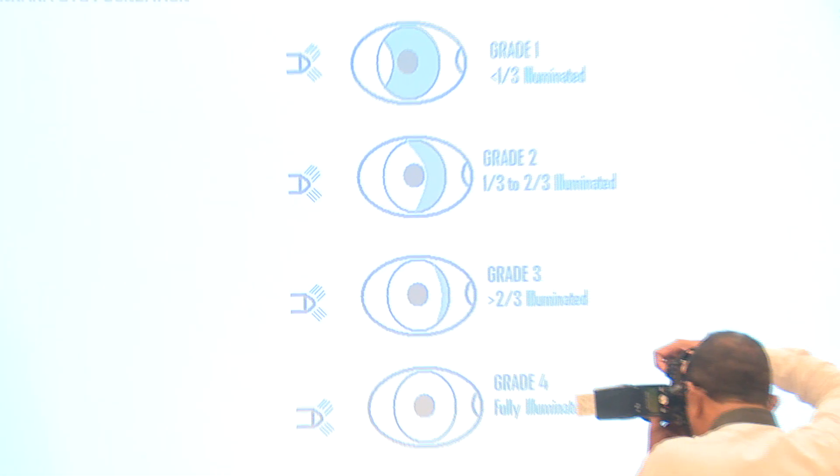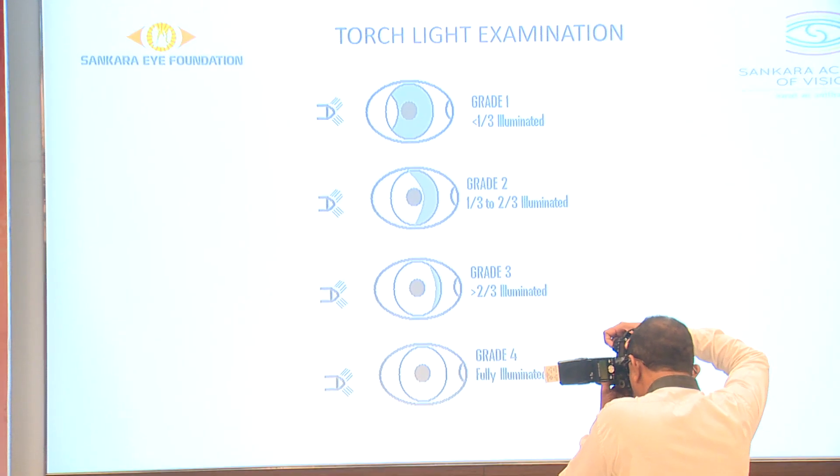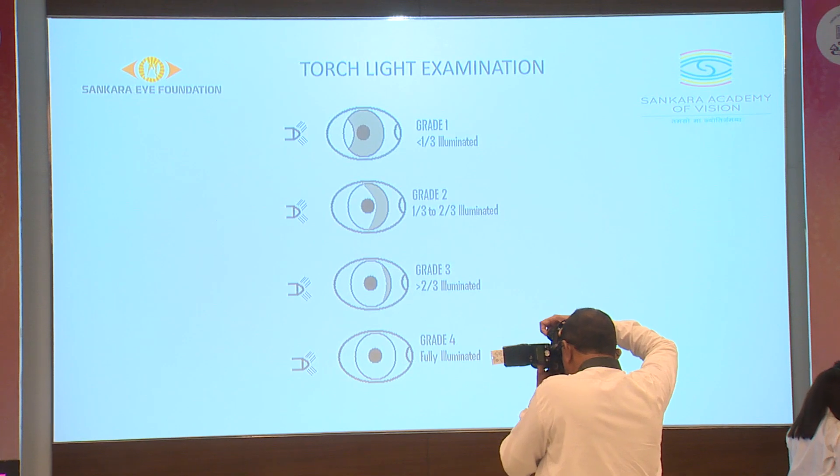On anterior chamber assessment, more emphasis will be on gonioscopy and the role of imaging in angle-closure glaucoma. Starting with torchlight examination: a pen torch is shown at the level of the eyeball from the temporal canthus, and depending on the iris that is illuminated, it is graded.